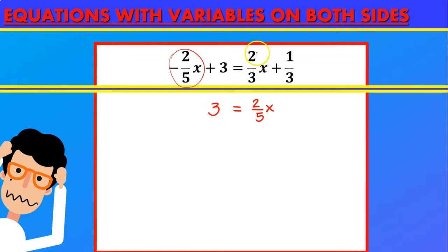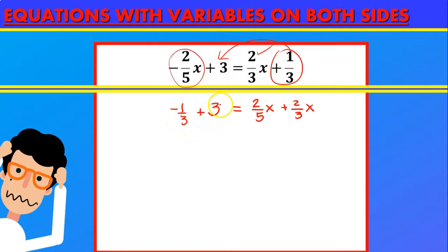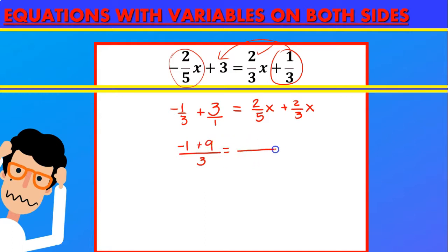The 3 stays the same, then plus two-thirds x stays the same. This coefficient we move to the left side, so minus one-third. So we have minus one-third plus 3 — we can write 3 as 3 over 1, take the common denominator of 3: 1 times minus 1 is minus 1, and 3 times 3 is 9. On the right side the greatest common denominator is 15: 15 divided by 5 is 3, times 2x gives 6x; 15 divided by 3 is 5, times 2x gives 10x. Remember how to solve fractions with common denominators.